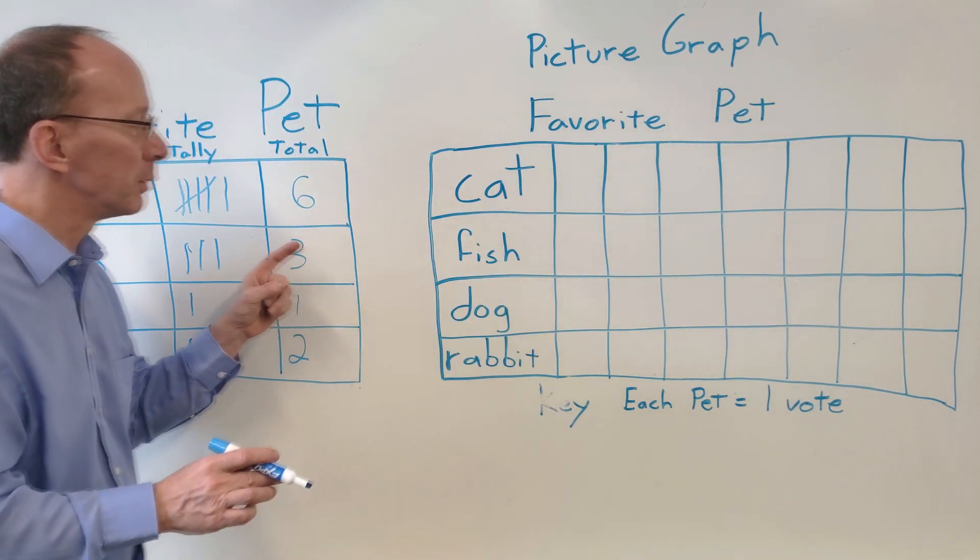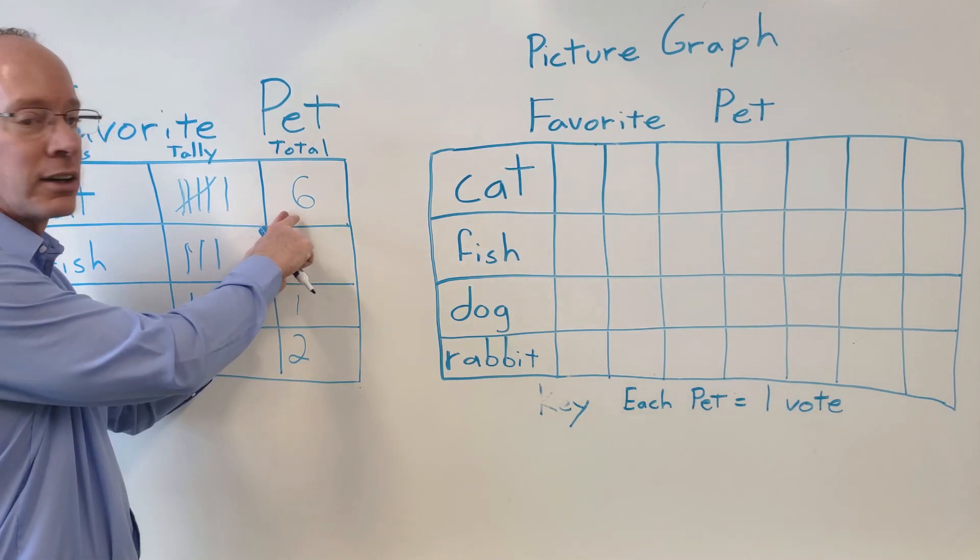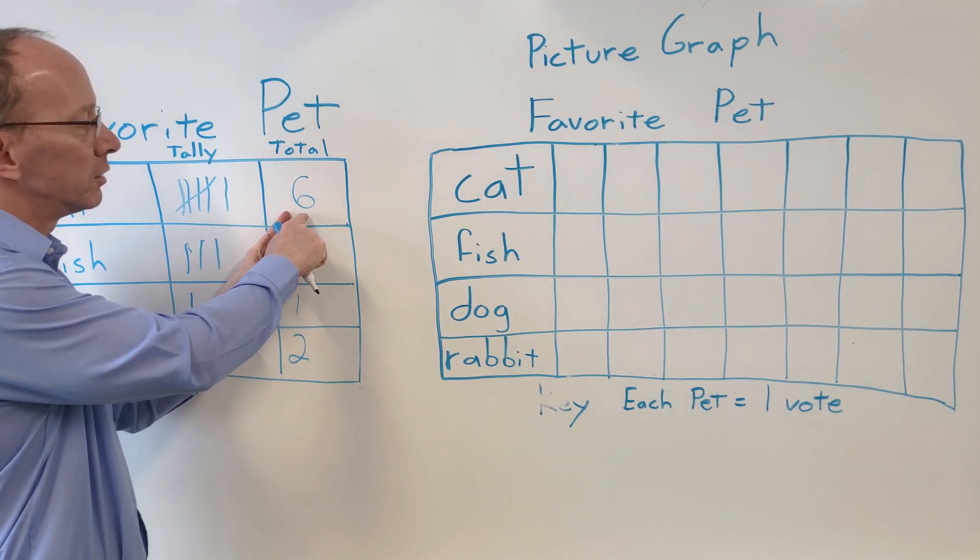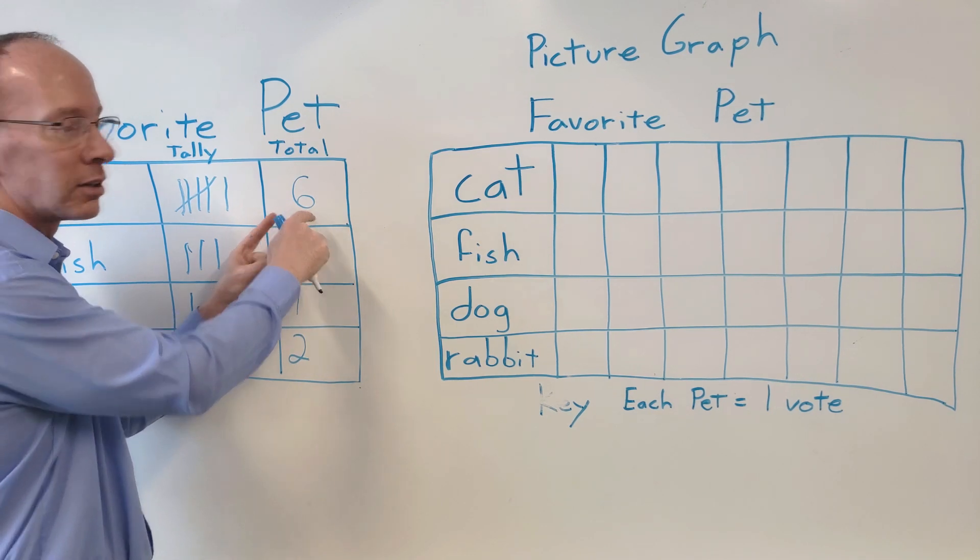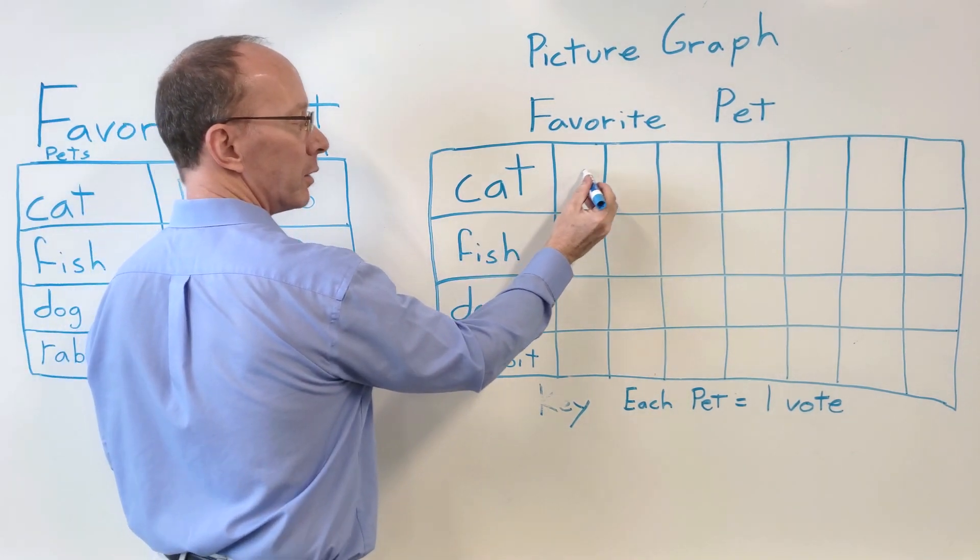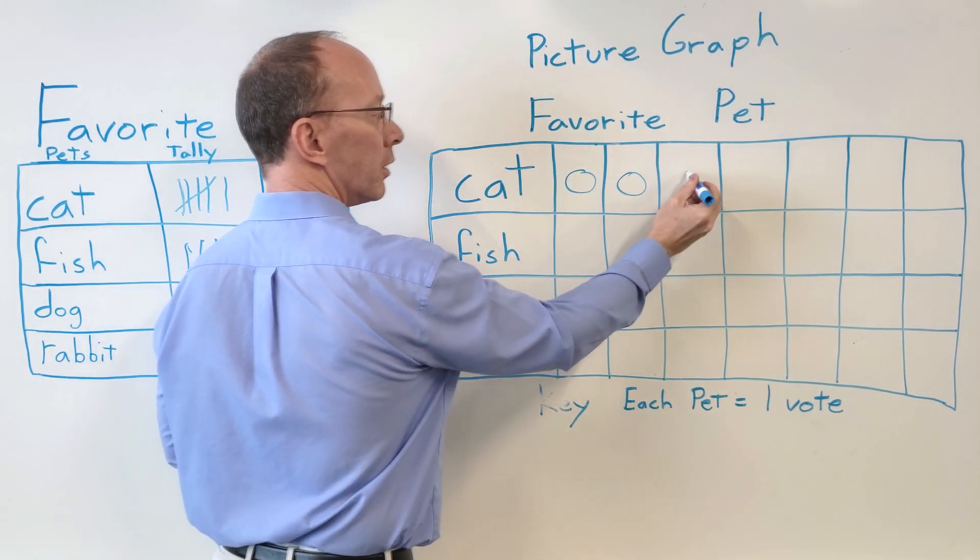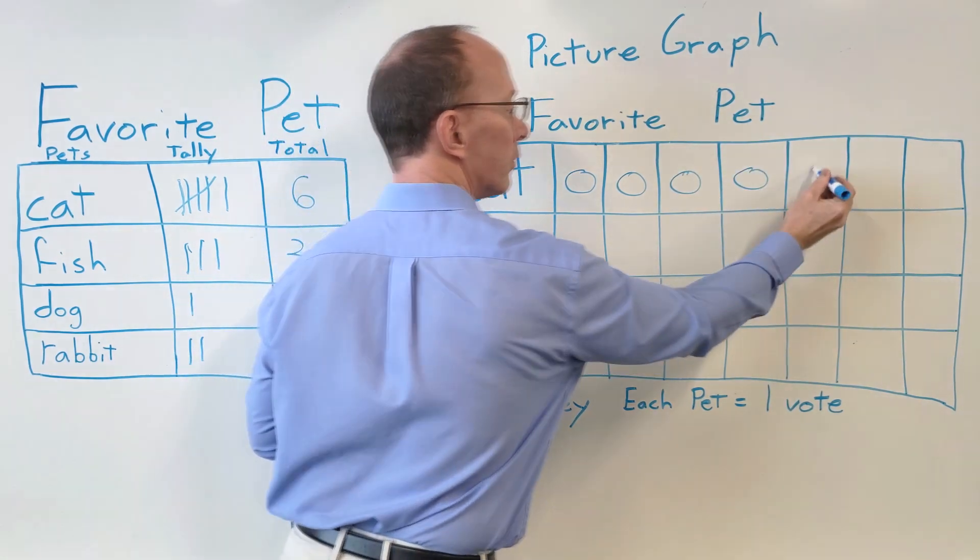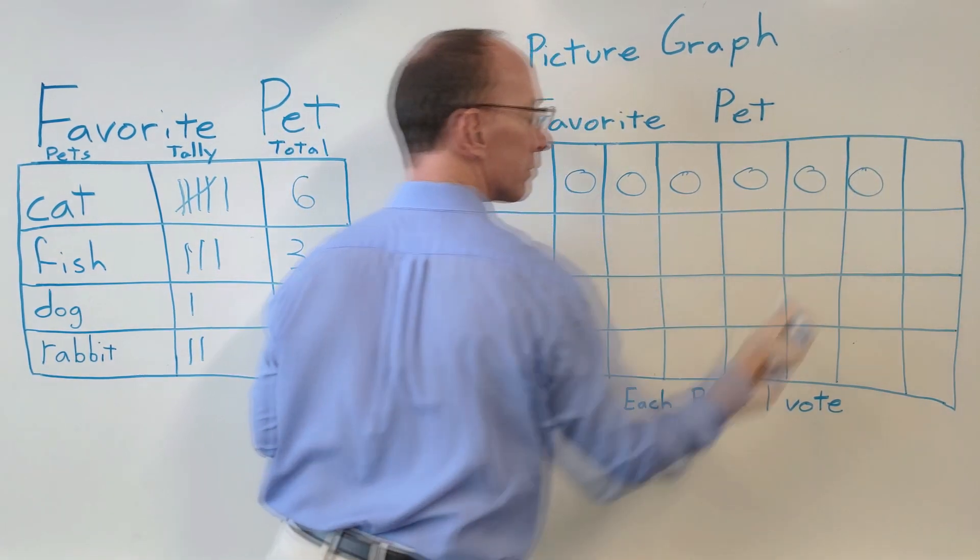So let's take our information we have. We have six for cat. So what we're going to do is we're going to draw six zeros. So count with me. We have one, two, three, four, five, six.